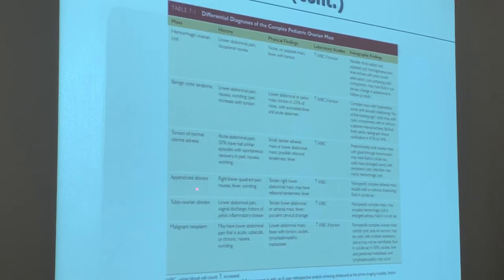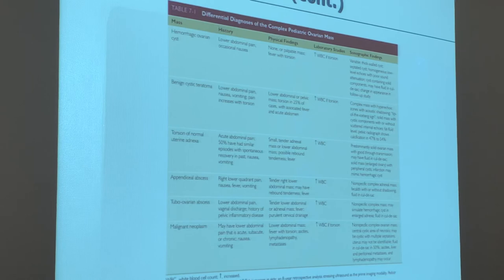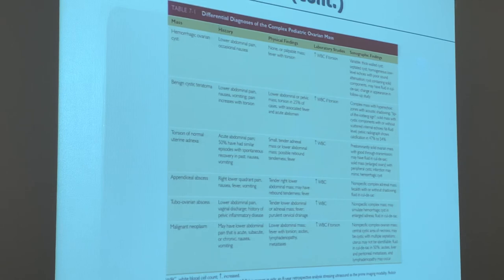An appendiceal abscess is essentially appendicitis. You can even have stones in the appendix — appendicoliths — which are surgically removed. If the appendix were to burst, it would cause peritonitis, which can progress to sepsis and death. So they always take it out.